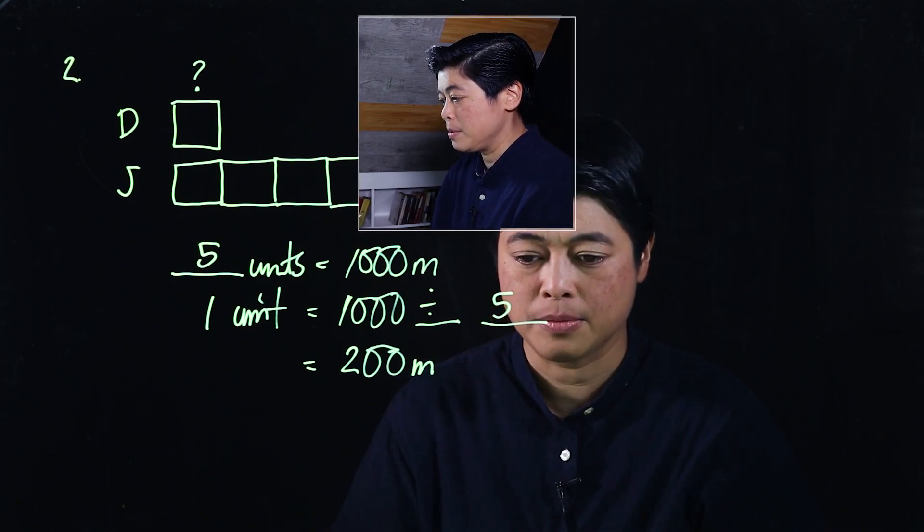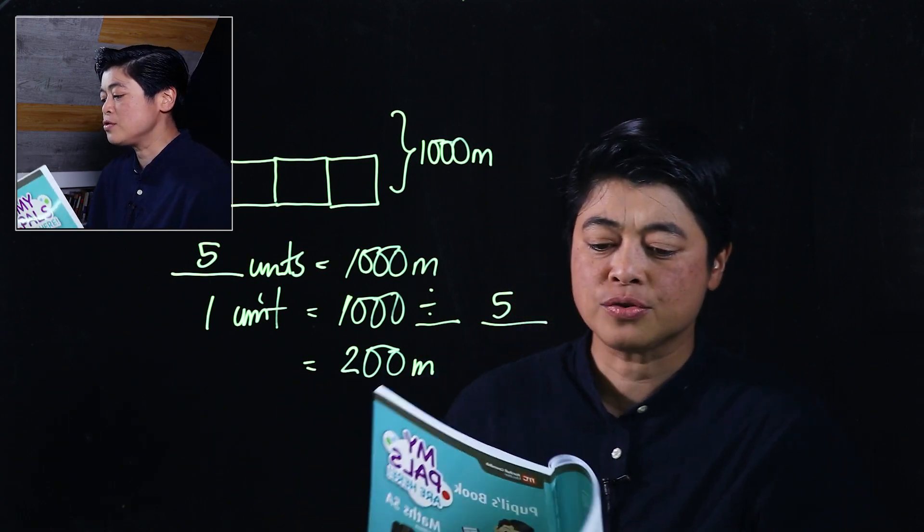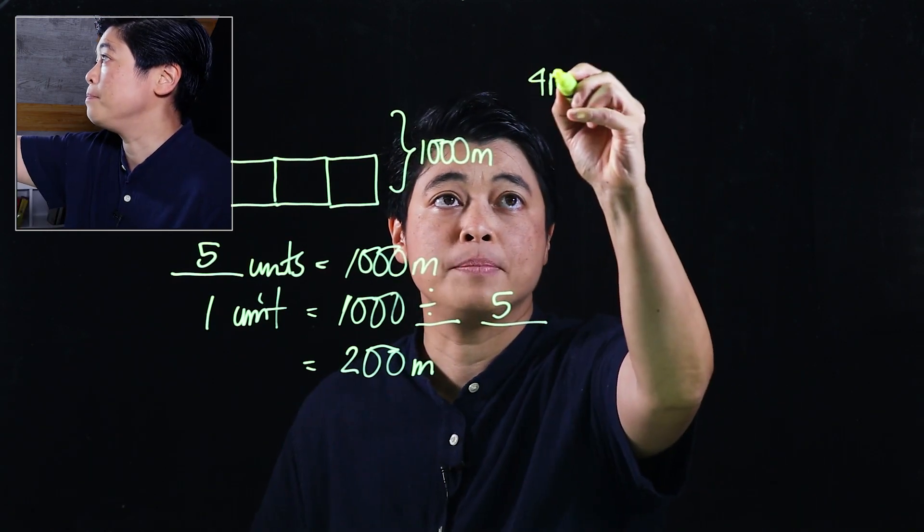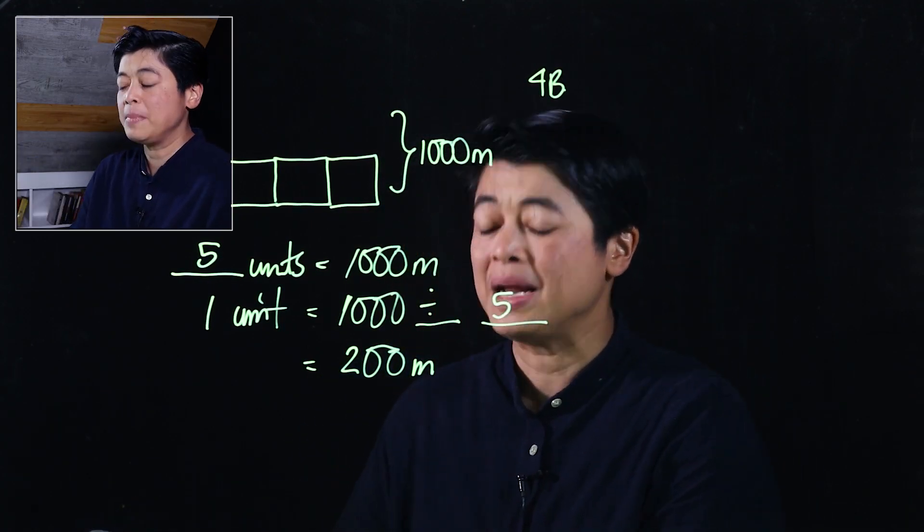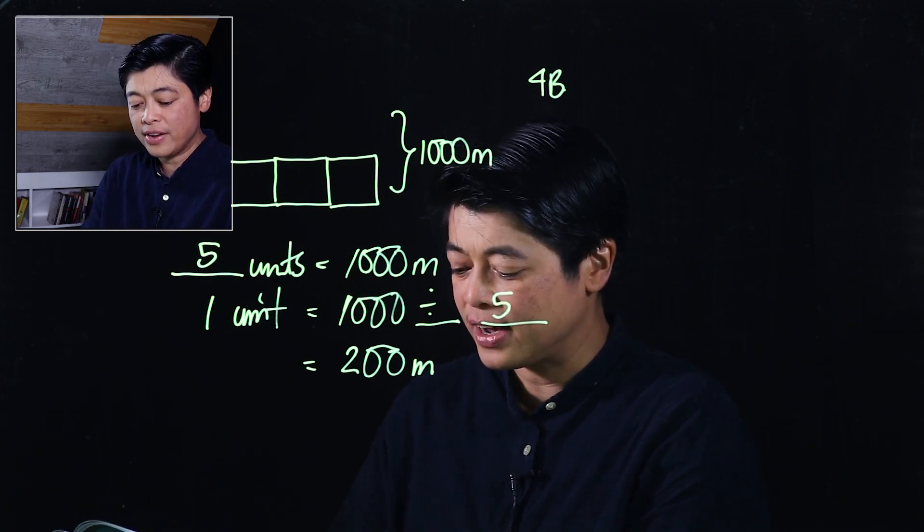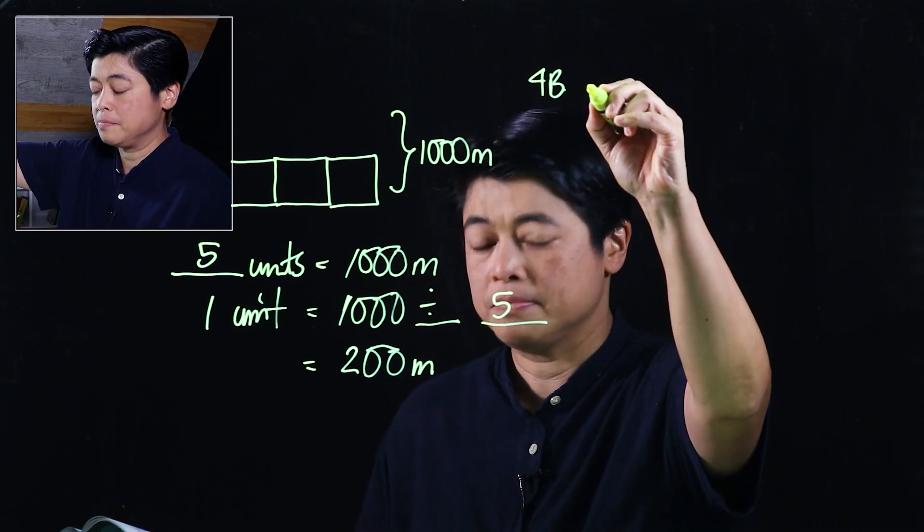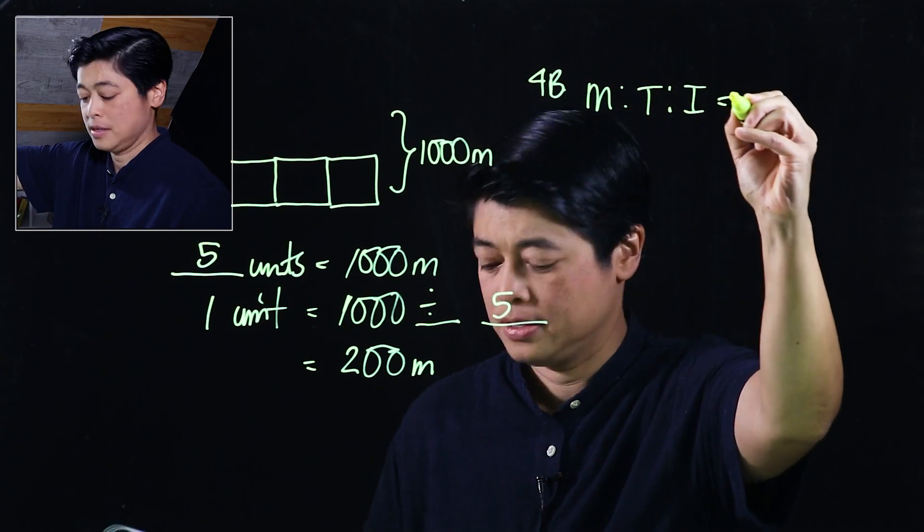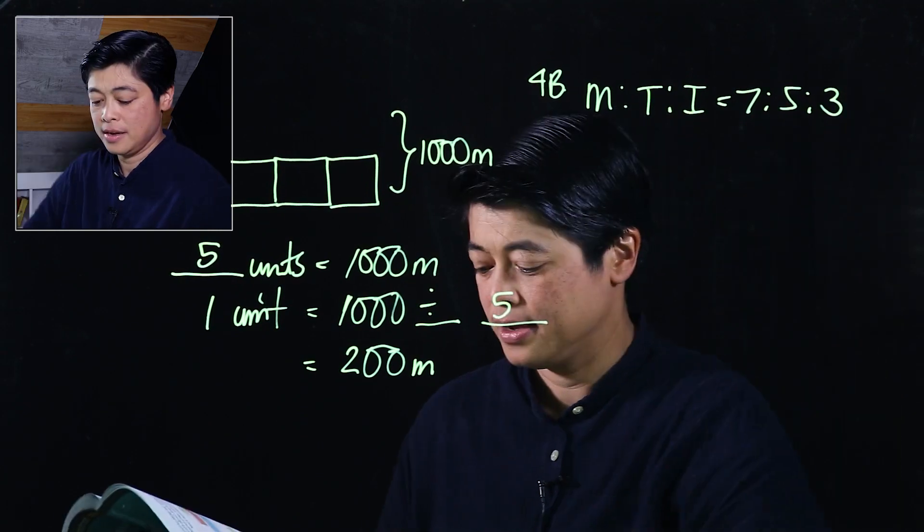Let's see another problem that we will do is on page 137. It says the number of stamps Don had from Malaysia, Thailand, and Indonesia were 7 is to 5 is to 3. So let me write those down first: Malaysia, Thailand, Indonesia is 7 is to 5 is to 3.